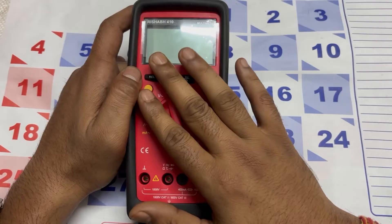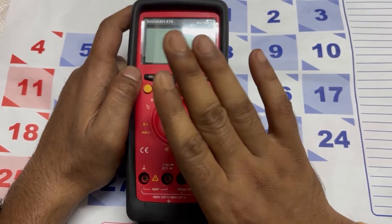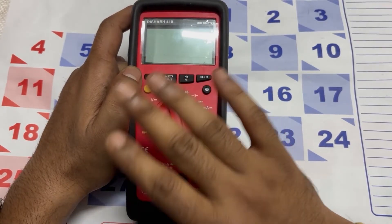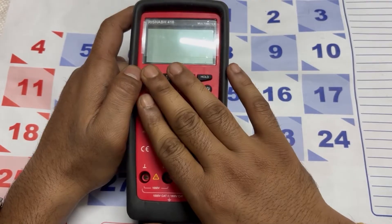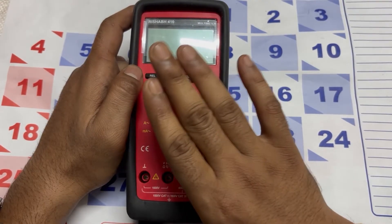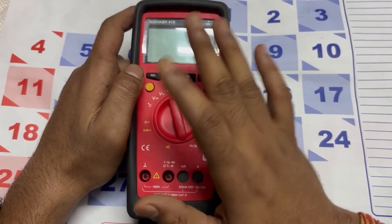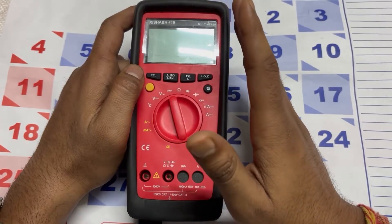A multimeter is a tool used to measure electrical quantities such as voltage, current, and resistance. The RESERV 410 multimeter is designed for general purpose electrical testing and troubleshooting tasks. If you have specific questions or need information about its features or how to use it, please let me know.